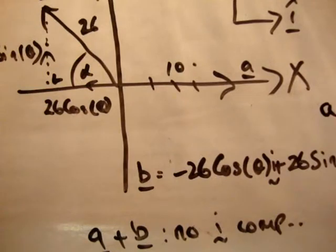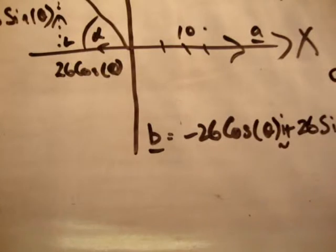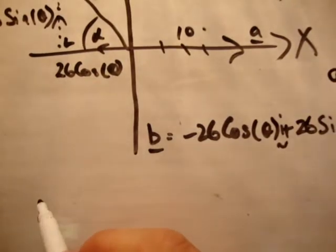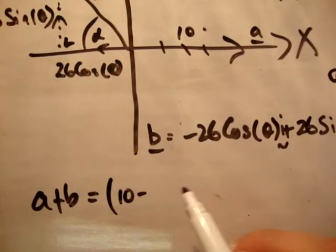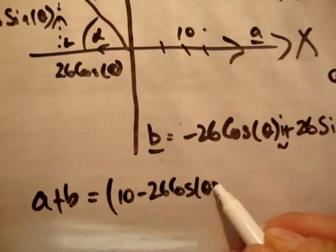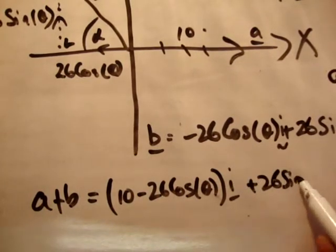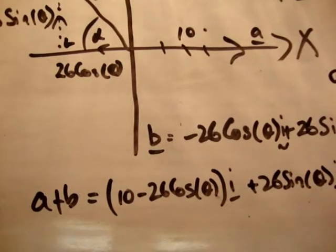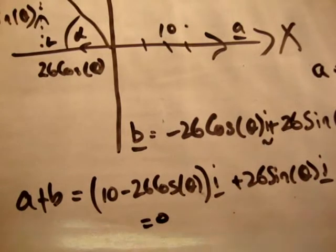Right, you're given that. So what you have to do is add a plus b. I'm going to do this quite quickly. So we have a plus b is equal to 10 minus 26 cos theta i hat plus 26 sine theta j hat. It's got no i hat component. This therefore is equal to 0.